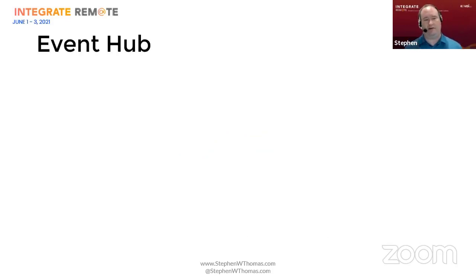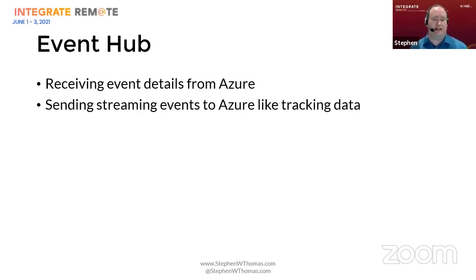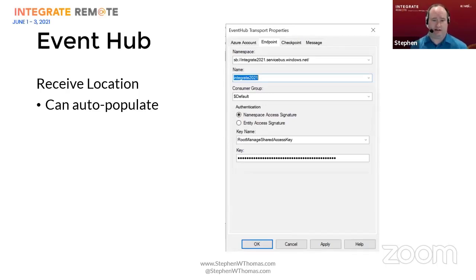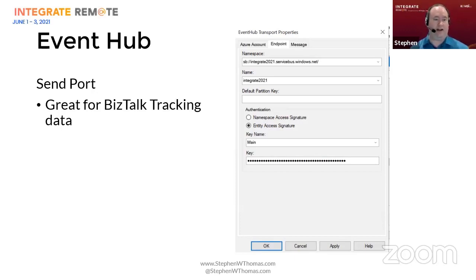The Event Hub Adapter is used for receiving event details from your Azure infrastructure. If you have an existing Azure infrastructure writing events to Event Hub, BizTalk can pull down those files in a timely manner and evaluate them locally. You can also send streaming events like tracking data into Azure Event Hub. The Event Hub adapter supports auto-populating from your Azure account, including name and security keys. You can define your partition key to tell BizTalk where your event messages should go. Of the four Azure-based adapters, Event Hub is the one I use the least — I just haven't had clients jump into those use cases yet.